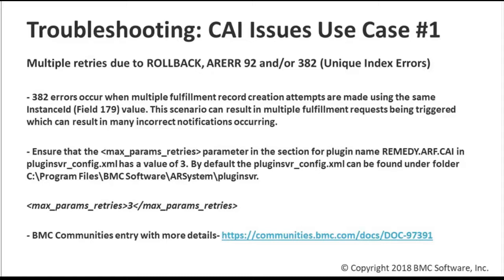I talked earlier about reprocessing failed records. There are a couple of options available — that can be done via the SRM request record itself or via the CI events record. An important note: if the record failed due to foundation data or some other data issue, before you reprocess that record you're going to need to correct that issue first. If the issue isn't corrected, the reprocessing isn't going to work. Make sure that whatever was the cause of the CI error has been corrected prior to reprocessing any events.